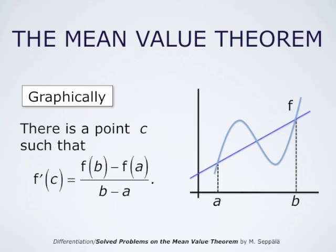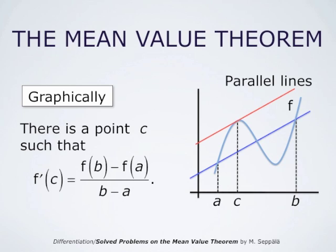The quantity f(b) minus f(a) divided by b minus a is the slope of the blue secant line shown in this picture. The secant line intersects the graph of f at the points (a, f(a)) and (b, f(b)). The point c is such that f'(c) equals the slope of the secant line, meaning the corresponding tangent line is parallel to the secant line. So the mean value theorem simply says there is a point c such that the red tangent line is parallel to the blue secant line.